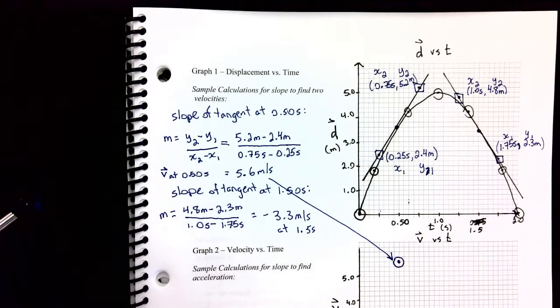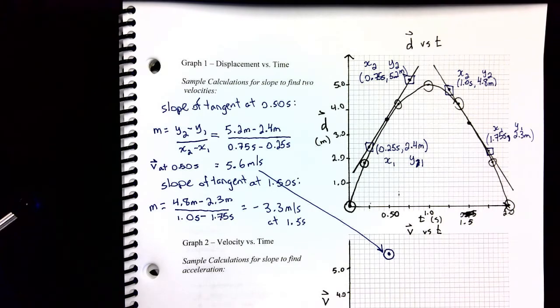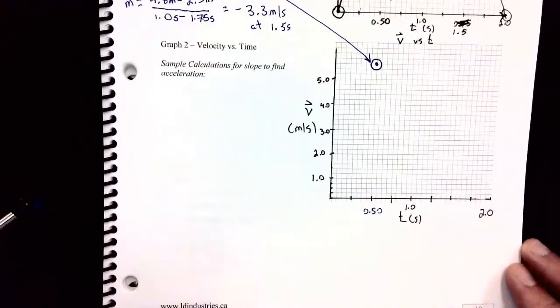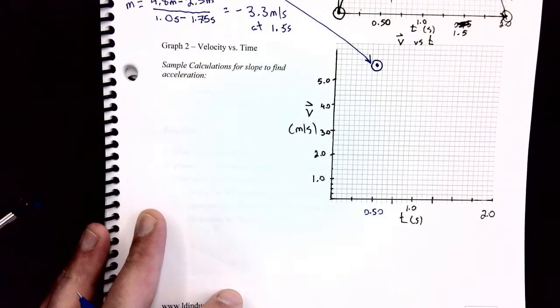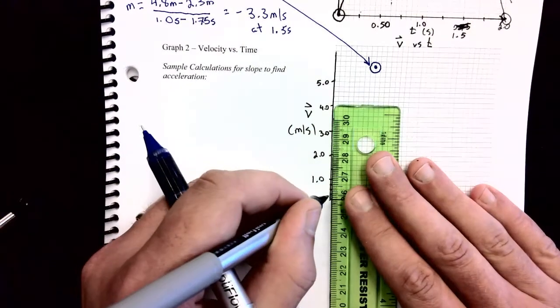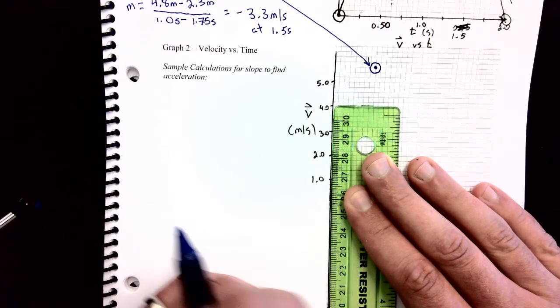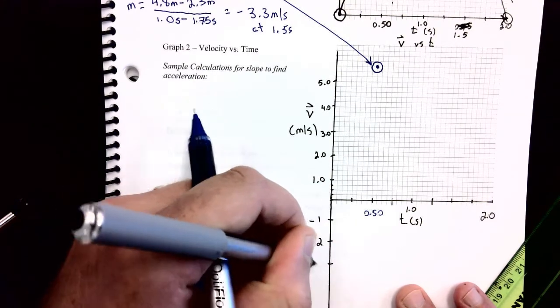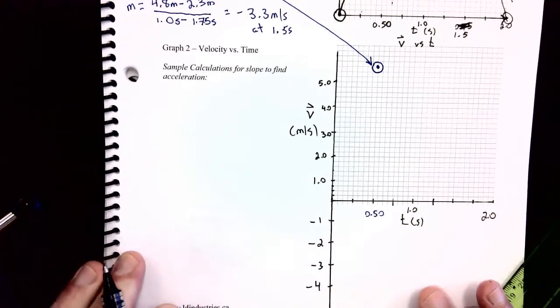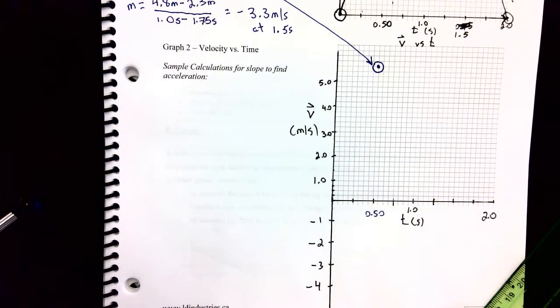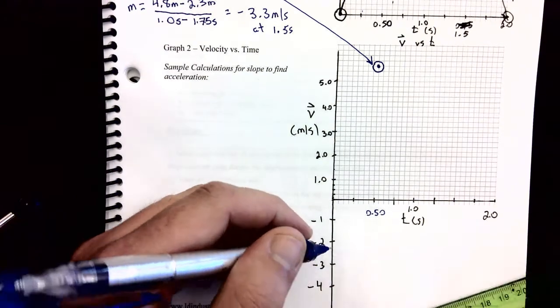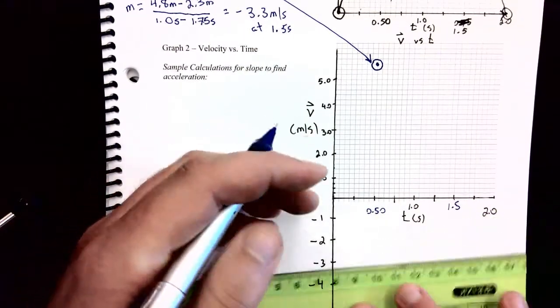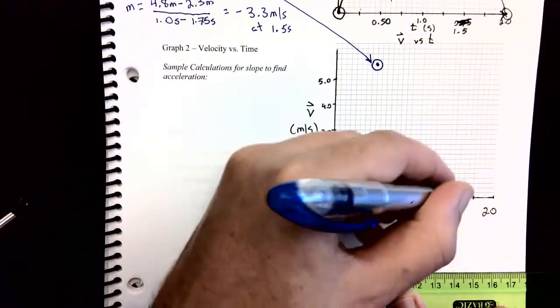So I'm getting negative 3.3 meters per second at a time of 1.5 seconds. That's the second point that I'm going to graph on my velocity time graph. And annoyingly, I set up my velocity time graph without thinking too hard. And I didn't leave myself much space in the negative on the grid, but that's okay. I'll just extend it down some. Negative 1, negative 2, negative 3, negative 4. That'll work. So now I'll go to 1.5 seconds, which is right here, and I'll go down to about 3, negative 3.3, put a point down.